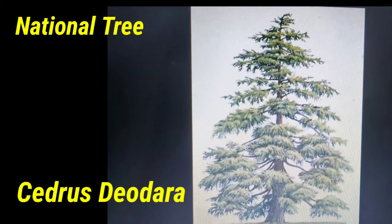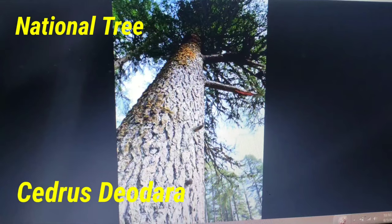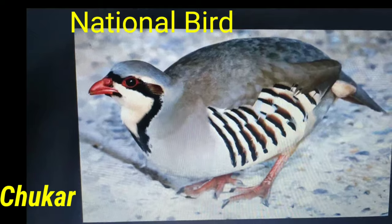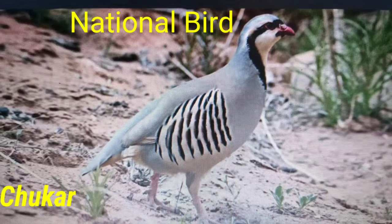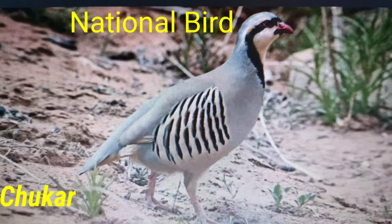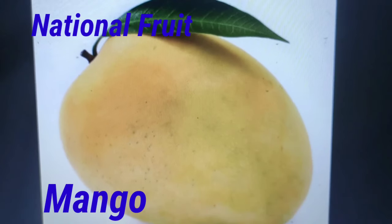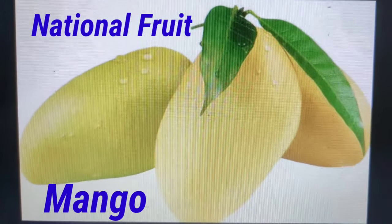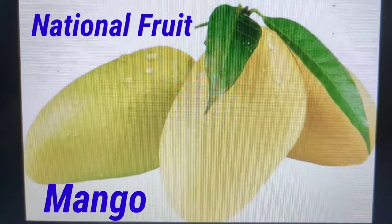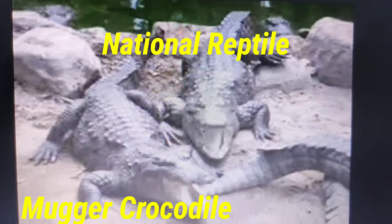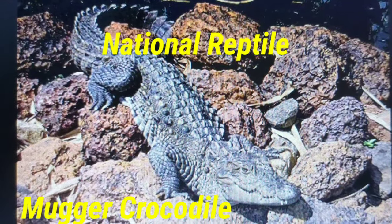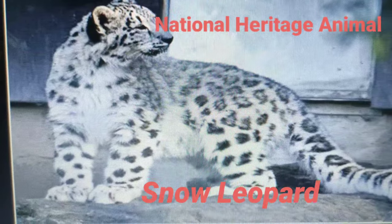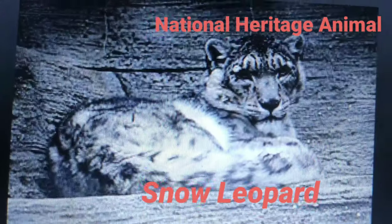The national bird is the chukar partridge. The national fruit is mango. The national reptile is the mugger crocodile, and the national heritage animal is the snow leopard.